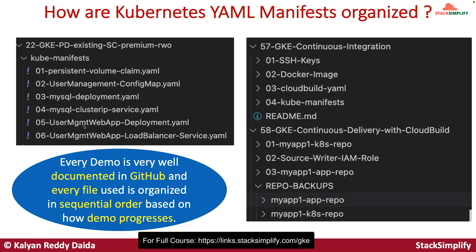Every file used is organized in sequential order based on how the demo progresses. In demos where we need multiple files, those are organized in a folder with related files inside. Based on how the demo progresses, in initial steps you will use 01-SSH-keys, then 02-Docker-image, and in following steps 03-cloud-build.yaml. Everything is organized in sequential order so we don't get confused about how to use and implement them. That's how we have organized all YAML manifests and related files required for each demo.